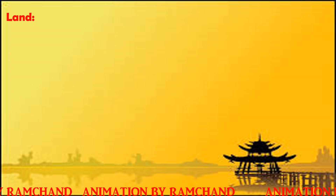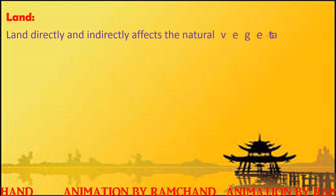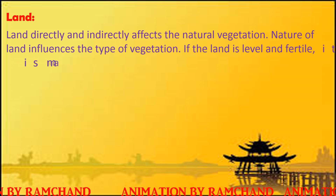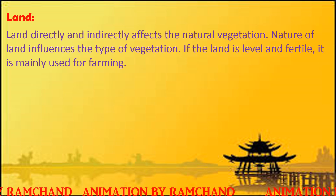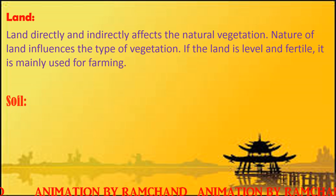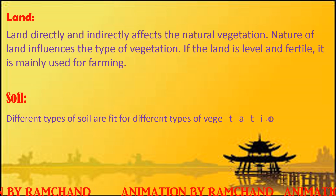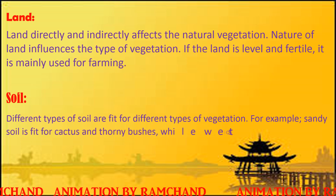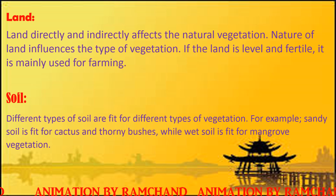Land directly and indirectly affects natural vegetation. The nature of land influences the type of vegetation. If the land is level and fertile, it is mainly used for farming. Different types of soil are fit for different types of vegetation.